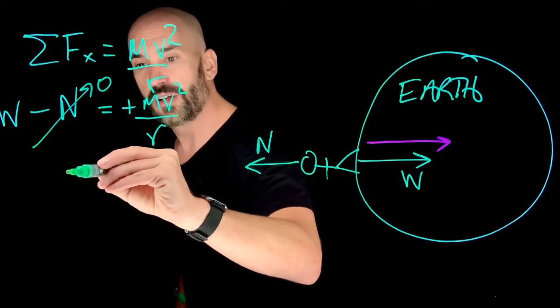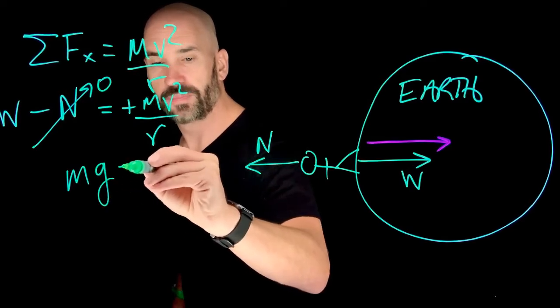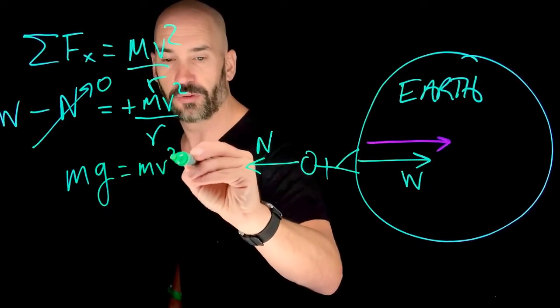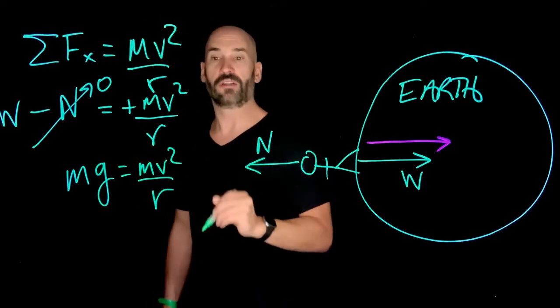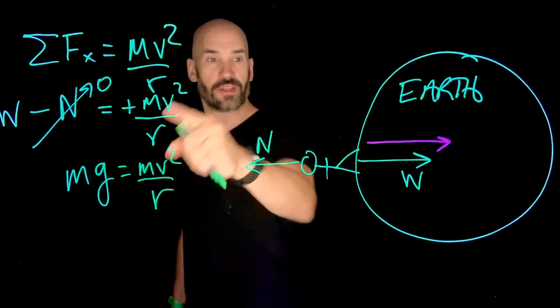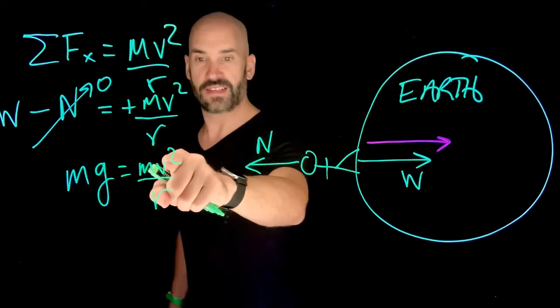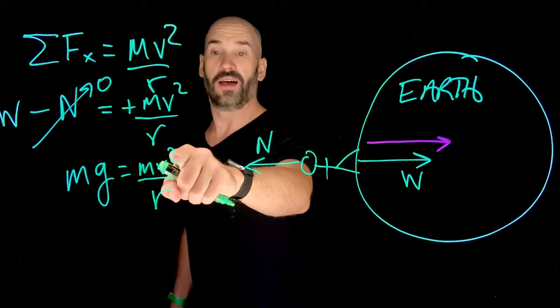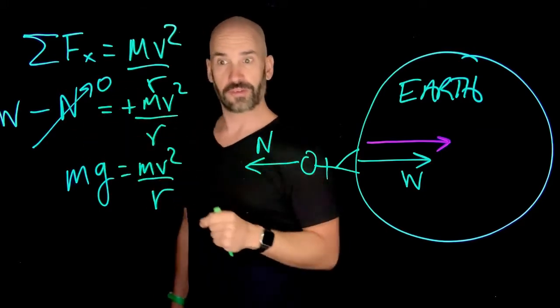And so really what we're asking is, when is the weight equal to centripetal force? In other words, what velocity of the earth spinning will create a sensation so that there's no more normal force?